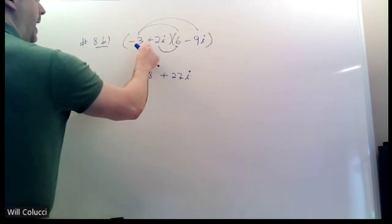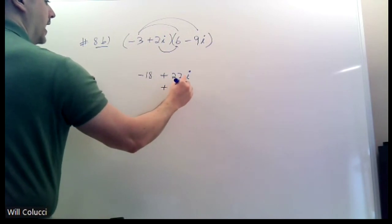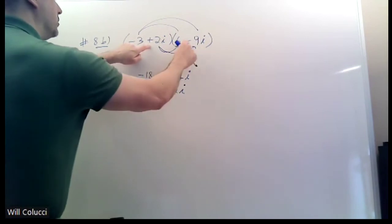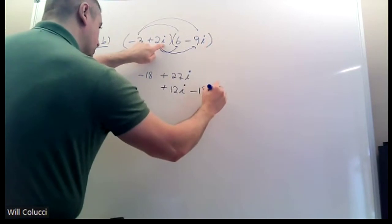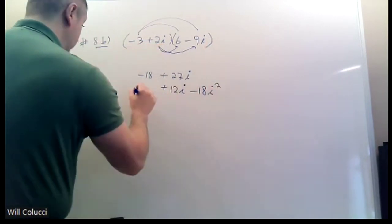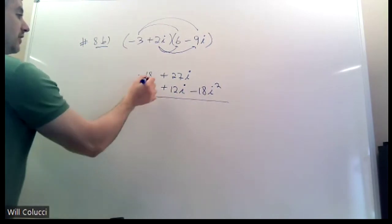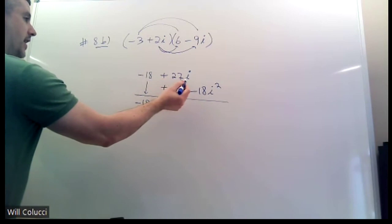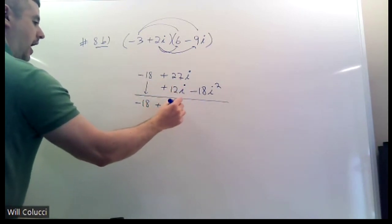Inner, you have a positive 2i times 6. 6 times 2 is 12. The i goes along to the right. Now, here's where the trickiness is going to come in. I have positive 2 times negative 9. That's negative 18. And then I have i times i, which is i squared. It's very, very, you really care for it. It's easy to make mistakes. This one comes down, negative 18. 27i and 12i make 39i.